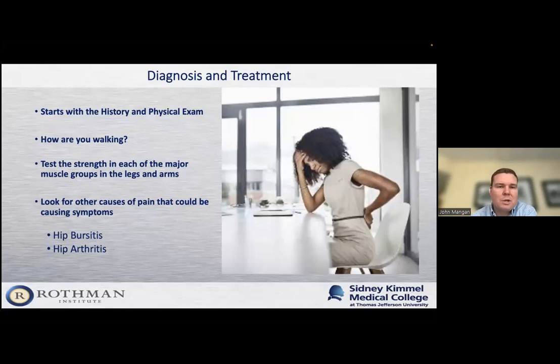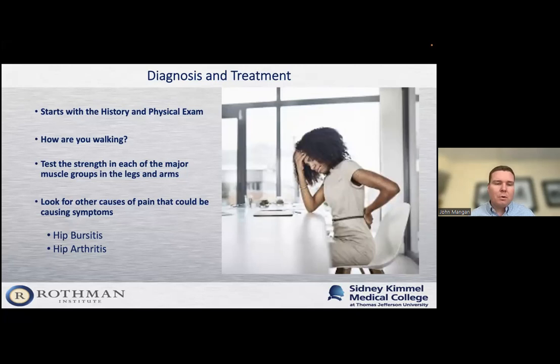What happens when you come to our office for a visit? It all starts with a history and physical exam. I want to know when the pain started, where you feel it, and what you've done to try to treat it so far. The physical exam is very important — I like to get every patient up and get them to walk. I want to see how they move within the room, how their gait is, whether they're having a painful gait or are weak. Then I'll test all of the major muscle groups in the arms and legs. The most important part of the physical exam for me is looking for other causes of pain besides something coming from the spine.